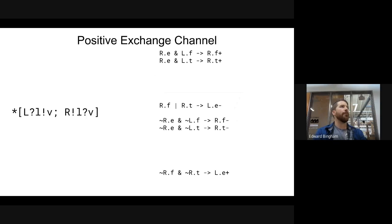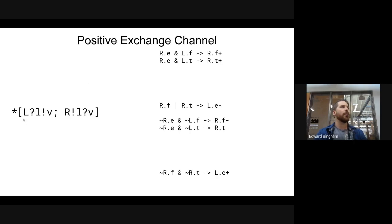In CHP, we represent this by channel actions. We have L, and normally we just have L receive or L send. But now we have L receive followed by send — we receive the value from the request into intermediate variable L, then send the value from V out on the enable. For R, we first send the value from the intermediate variable down the requests, then receive the value from the enable into intermediate value V. V is the value sent from V down the enable on L — it's the value stored from the previous cycle.